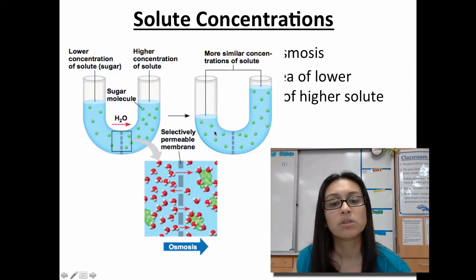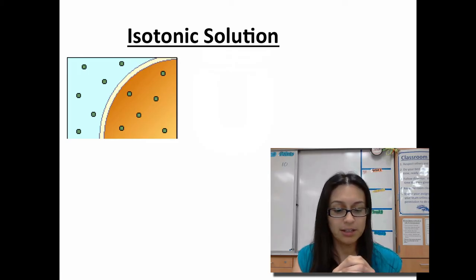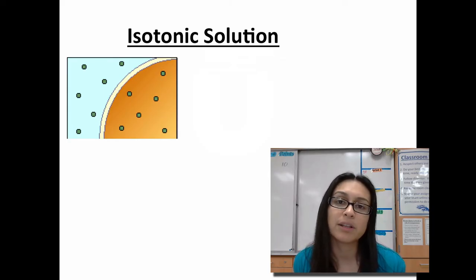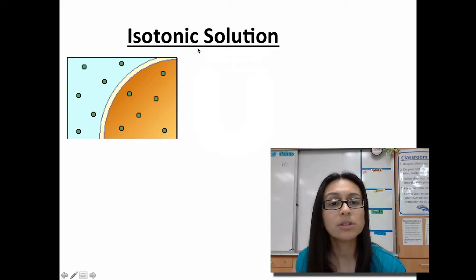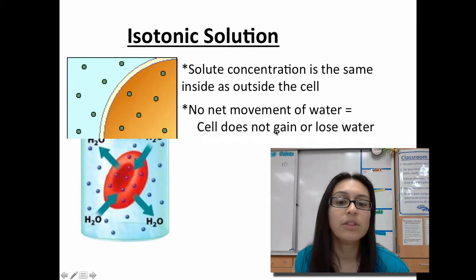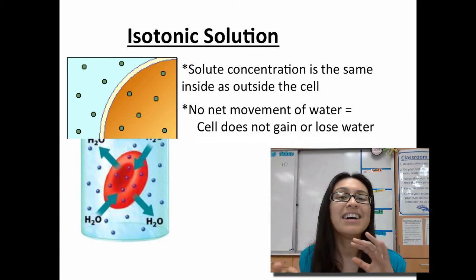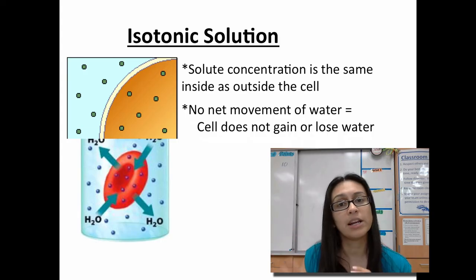The water wants to move to the other side where there is more solutes to try to balance out. Now, cells don't exist by themselves — they're not in some closed system. We are constantly putting stuff into our bodies and stuff is constantly coming out. The first environment is an isotonic solution. Isotonic means there's an equal number of solutes inside versus outside of the cell, so there's going to be no net movement of water. The cell won't lose or gain water. Isotonic is what our cells prefer — equal solutes inside and outside, so you're not losing water and you're not gaining water.